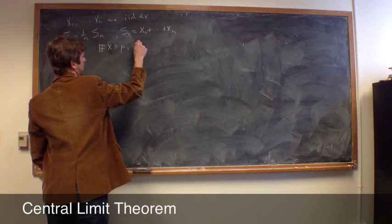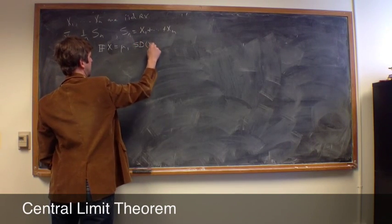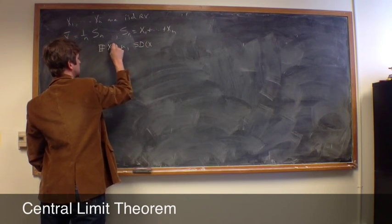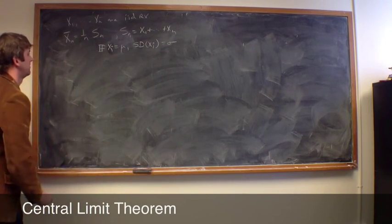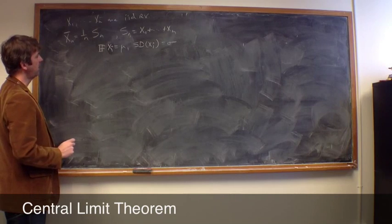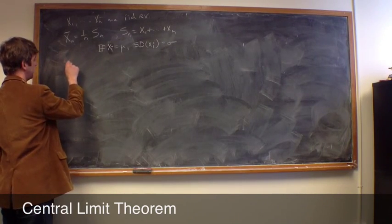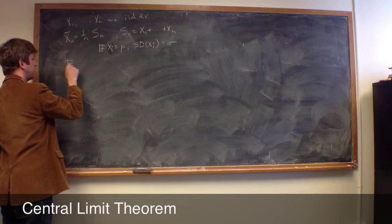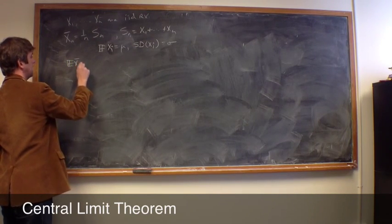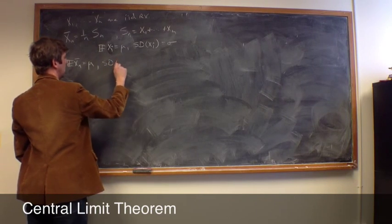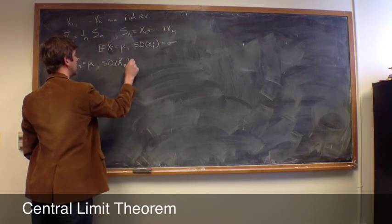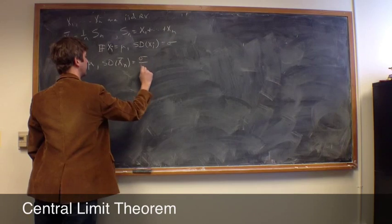and if we assume that the expected value of x is mu, and the standard deviation of x, so any of the xi's, is sigma, then we saw that the expected value of x̄n is mu, and the standard deviation of x̄n is sigma over square root of n.